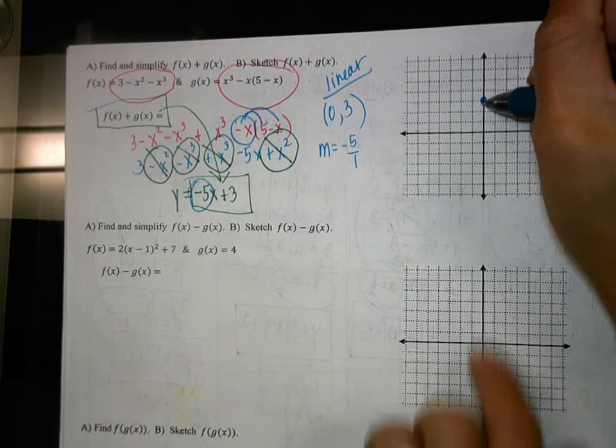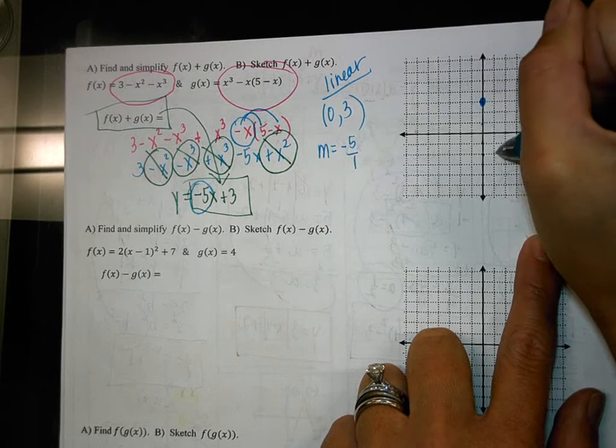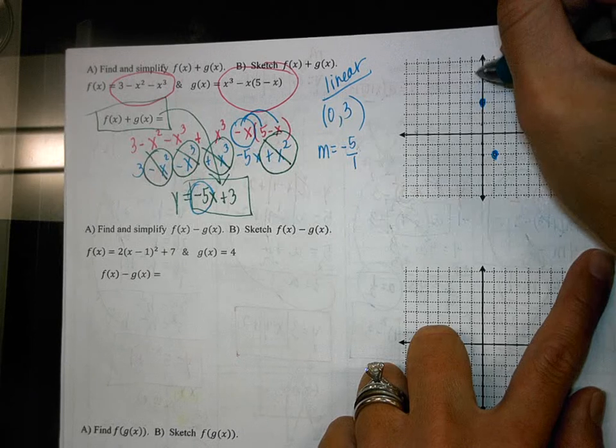So at my starting point, we're going to go down 5, 1, 2, 3, 4, 5, and then positive 1, right 1, and then you can draw your line.